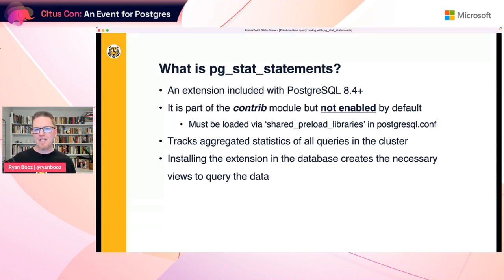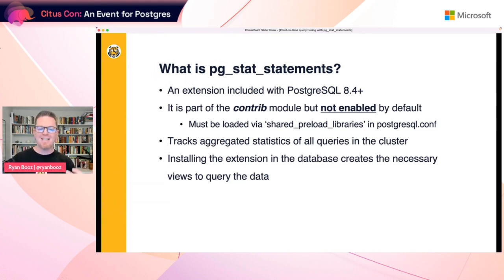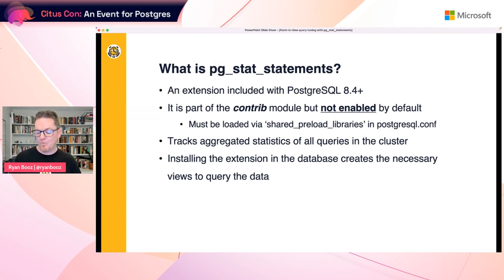What pg_stat_statements does is track aggregated statistics for all queries in the cluster. In Postgres, a cluster is what other databases might call a server with multiple databases — all of those databases together is considered a cluster. As soon as it's enabled, it will start tracking statistics for those databases. For you to actually see the data, you need to install the extension within a database, which provides the view so you can query that information.